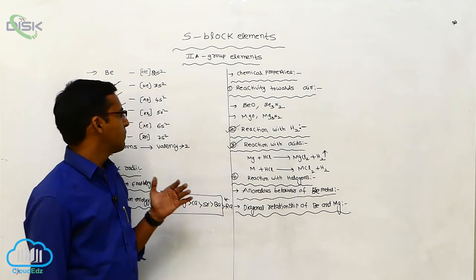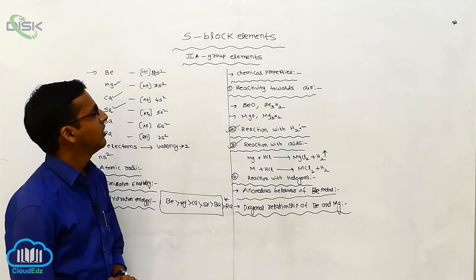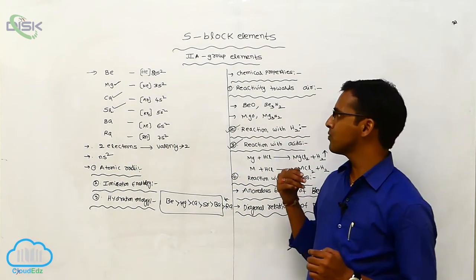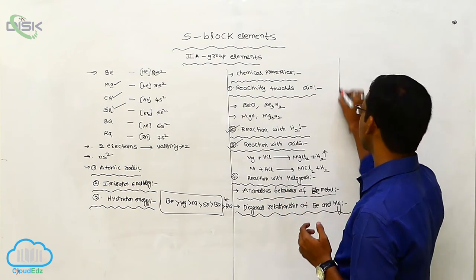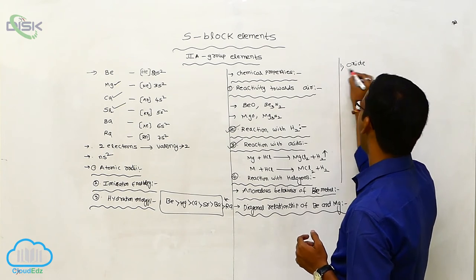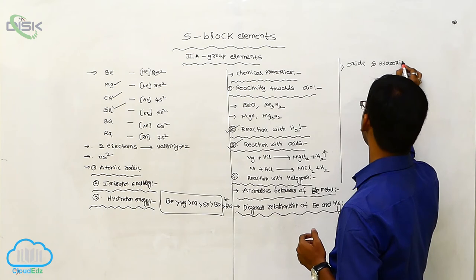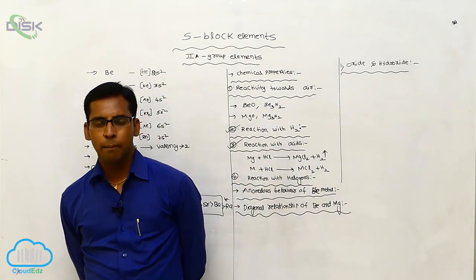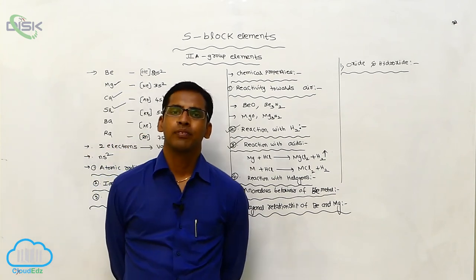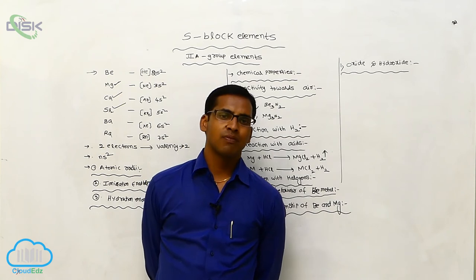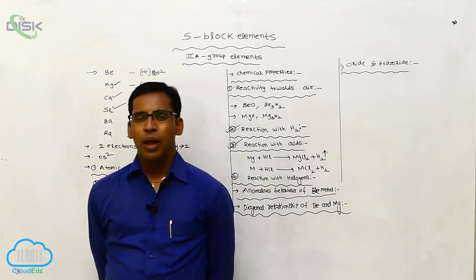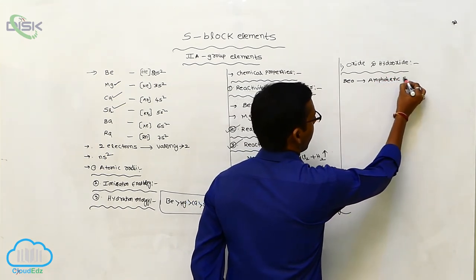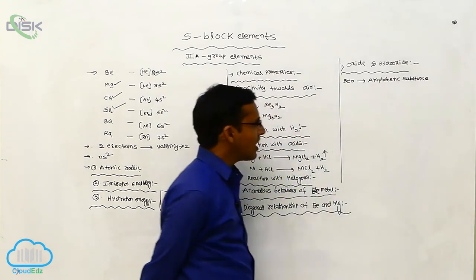Up to this point, we have covered the physical and chemical properties of secondary group elements. The next topic is general characteristics of secondary group elements, beginning with oxides and hydroxides. Beryllium and magnesium metals are inert to air, but under drastic conditions they form their respective oxides. Beryllium oxide acts as an amphoteric substance.